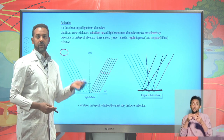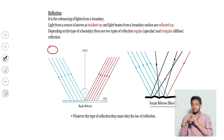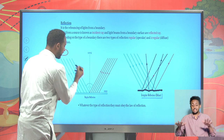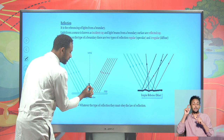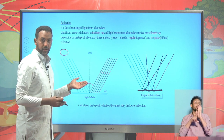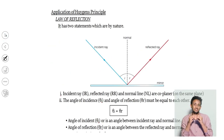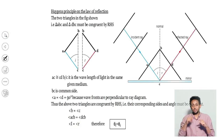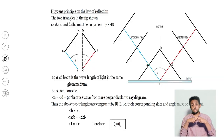We are going to apply Huygens' principle to prove the law of reflection. The law of reflection states that the incident ray, reflected ray, and normal line are coplanar, and the angle of incidence equals the angle of reflection. Using a mathematical approach — similarity and congruency of triangles — it is possible to show that Huygens' principle obeys the law of reflection. You can find this in your physics textbook.